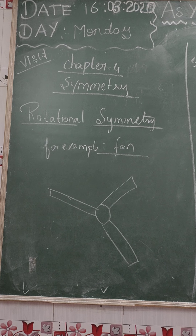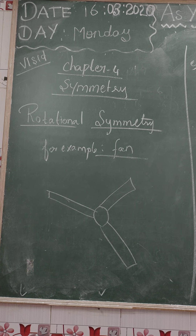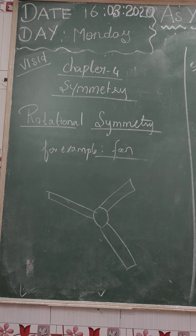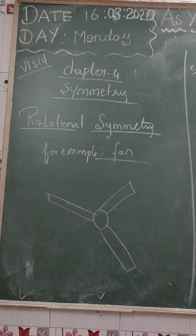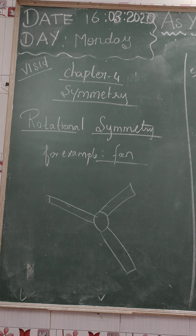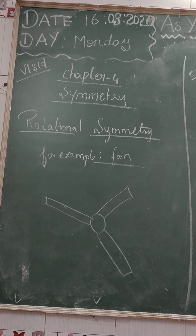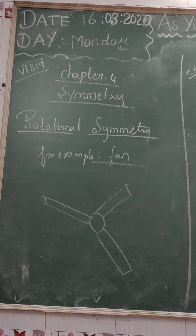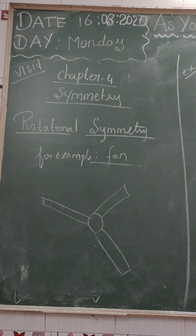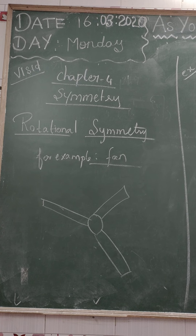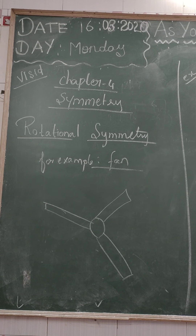How do we rotate? If we rotate to the same position, we can see the same side. This is the rotational symmetry. For example, we can see the fan — the fan is the best example. If we rotate to the same side, we can see the same place.